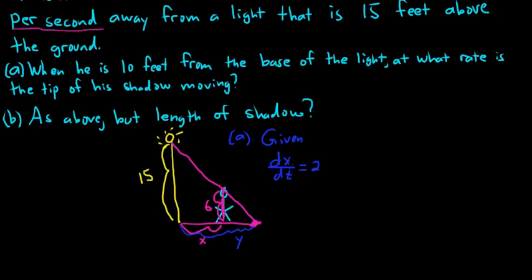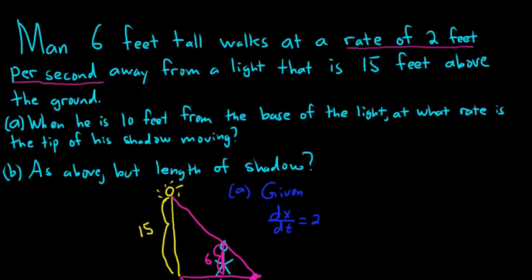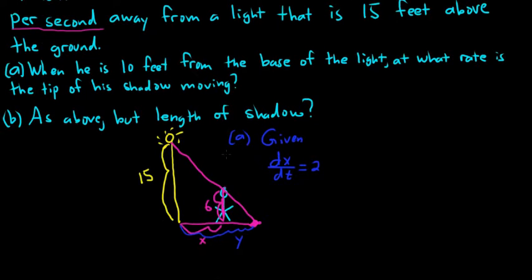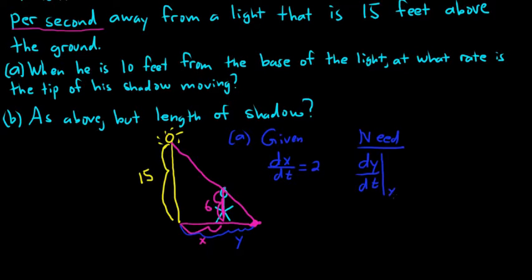For part A, what we need is the rate of change of the tip of his shadow — that's dy/dt. Any time you see 'rate,' you know it's a derivative. We want that at the moment in time when x is equal to 10.